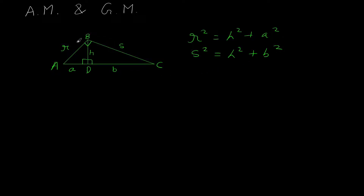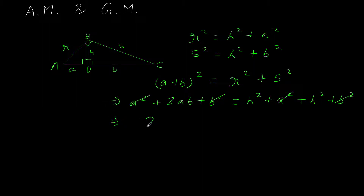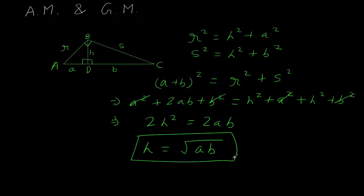For the big triangle ABC, the hypotenuse is A + B. Therefore (A + B)² = R² + S². Expanding, A² + 2AB + B² = H² + A² + H² + B². The A² and B² terms cancel from both sides, leaving 2H² = 2AB, so H = √(AB).